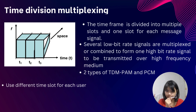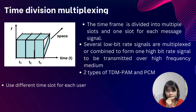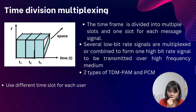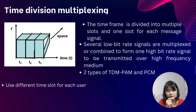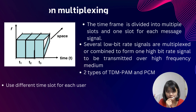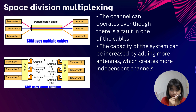For Time Division Multiplexing, the time frame is divided into multiple slots and one slot is allocated for each signal. They share the same carrier frequency but different time slots. Several lower bit-rate signals are multiplexed or combined to form a high bit-rate signal to be transmitted over a high-frequency medium. There are two types of TDM: PDM and PCM.